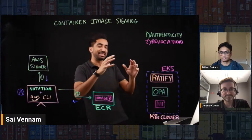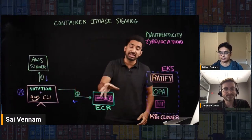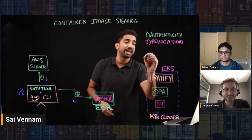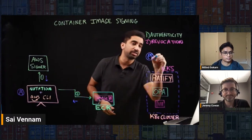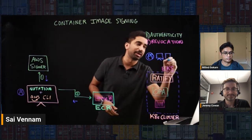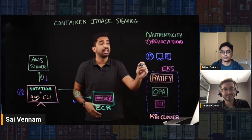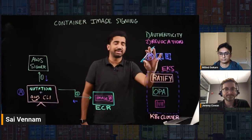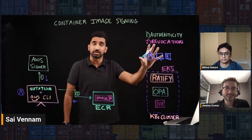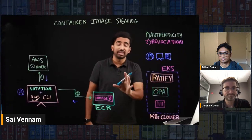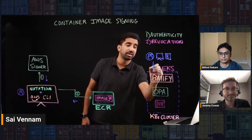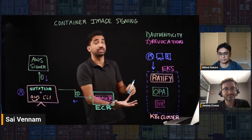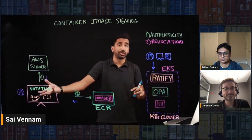We've got the image in ECR and it's signed. Now we need to build a workflow where a user — maybe they have some Kubernetes manifest YAML or are running deploy commands — wants to deploy an application into EKS. This could also be a CI/CD pipeline. We want to automate that verification step so that when they push their deployments into the cluster, it does the same verification flow that Millen showed locally with Notation.